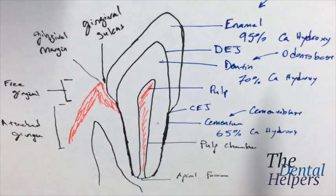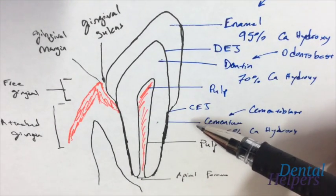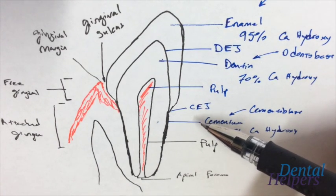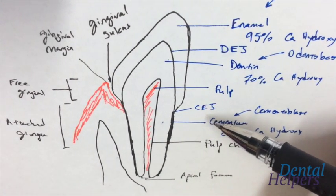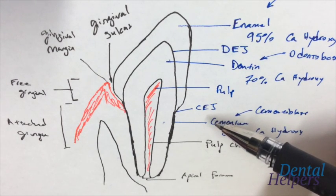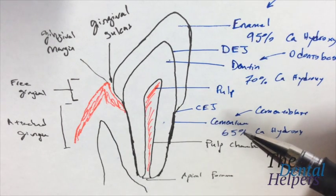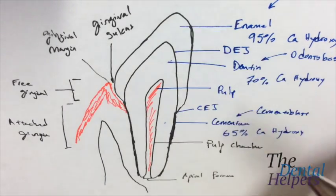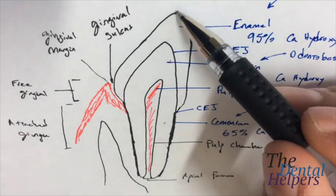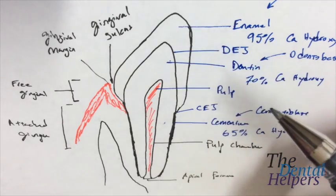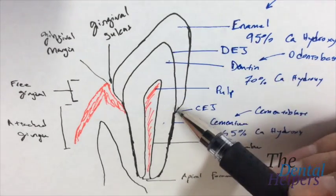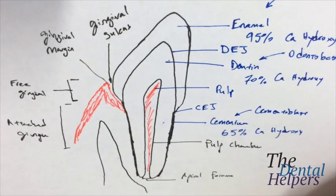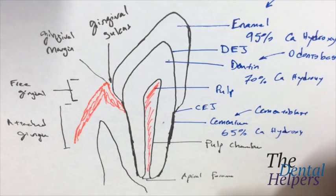And what we also need to know is some specific terms that distinguish what a clinician sees versus what an anatomist sees. So somebody studying anatomy would say, from the CEJ to the tip of the tooth, or the tip of the crown, I should say, is the anatomic crown. An anatomist would also call the CEJ down to the root, the anatomic root.